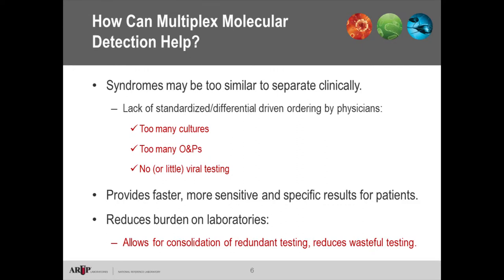So how can molecular testing for pathogens help? If we multiplex our targets — putting multiple targets into one assay — we can overcome some hurdles. The syndromes are too similar for physicians to practically distinguish, such as campylobacter versus giardia. Physicians also have difficulty ordering tests in a consistent, standardized way: too many stool cultures, too many O&P exams, and very little viral testing.